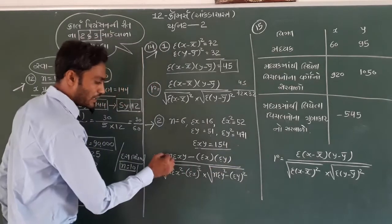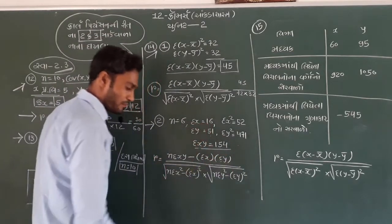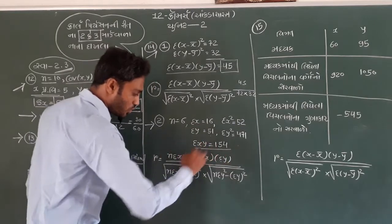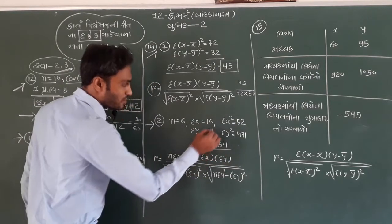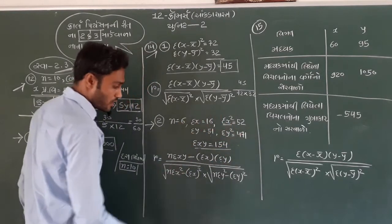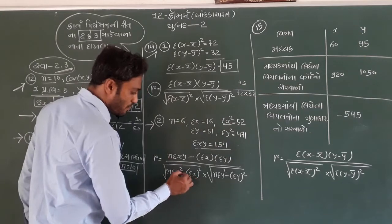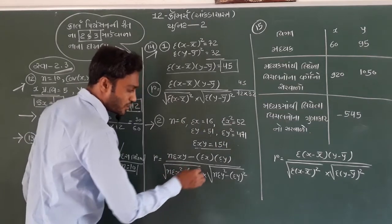So the formula is: n times sigma x-y minus sigma x times sigma y. In the work, sigma x-squared — which you have here — sigma x minus sigma x. So what would sigma x be? It would be out of the result.